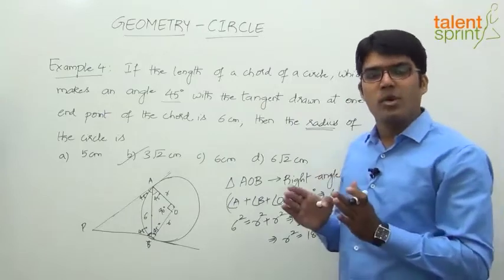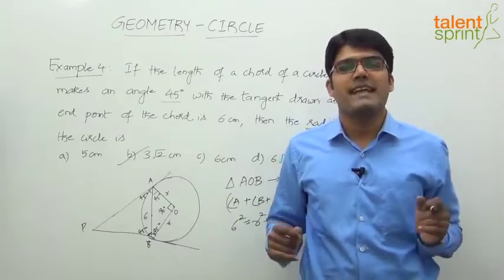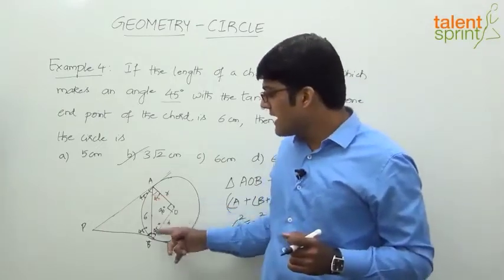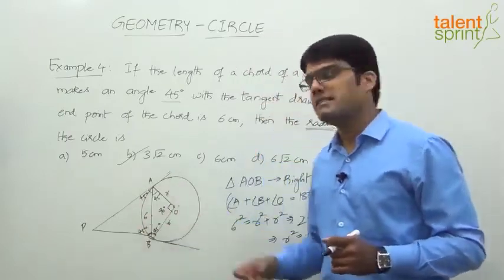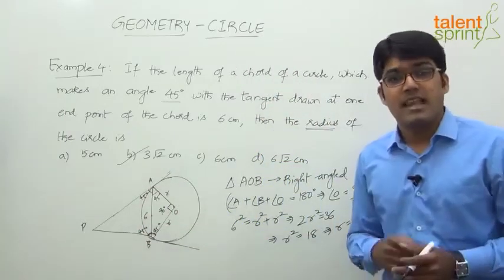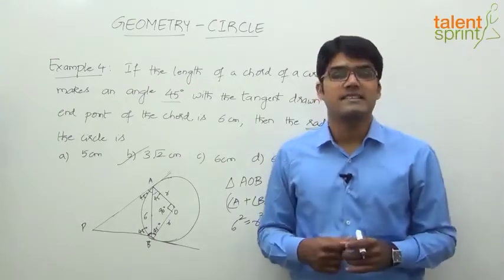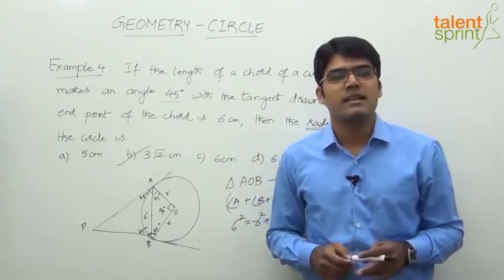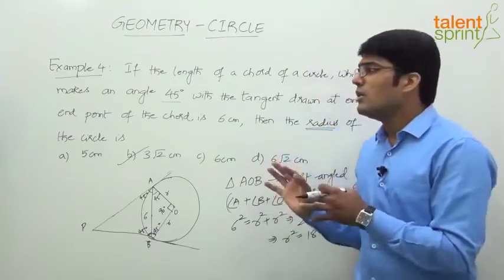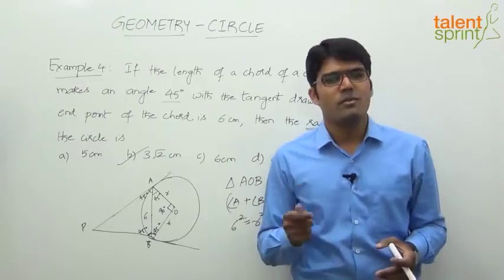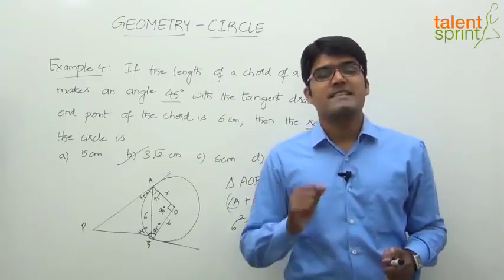The key insight is simple: the angle made by the radius with the tangent at the point of contact is 90 degrees. From that, we get angles of 45 and 45, form a right-angle triangle, apply Pythagoras, and find the radius. This is one of the previous years' SSC CGL exam questions — looks complex but is actually very simple. The more you practice, the easier it gets.